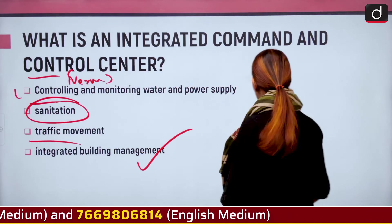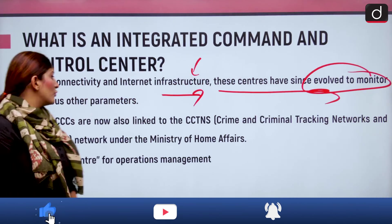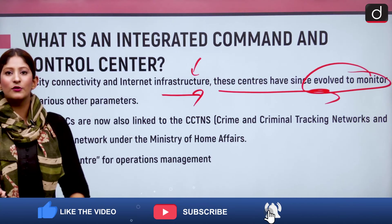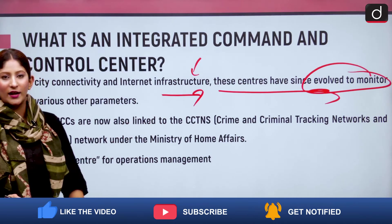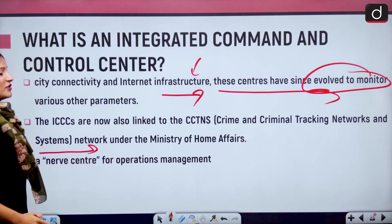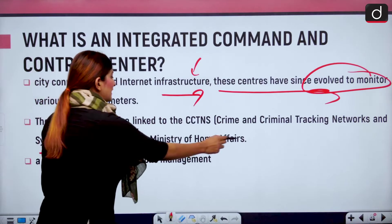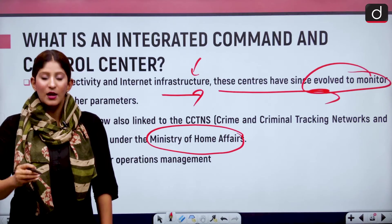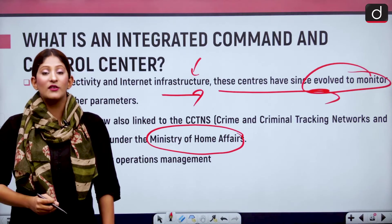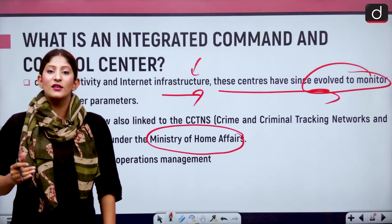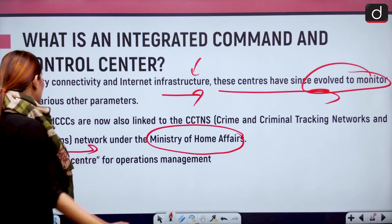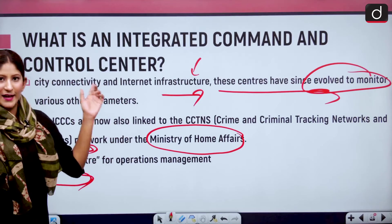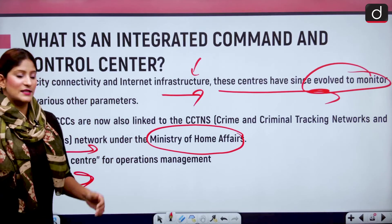These centers have evolved to monitor various other parameters. ICCCs are now linked to the Crime and Criminal Tracking Network System — CCTNS — which is under the Ministry of Home Affairs. CCTNS is a part of the digital initiative to enhance the operation of the national policing system under the national digital mission, making ICCCs a nerve center for operation management.